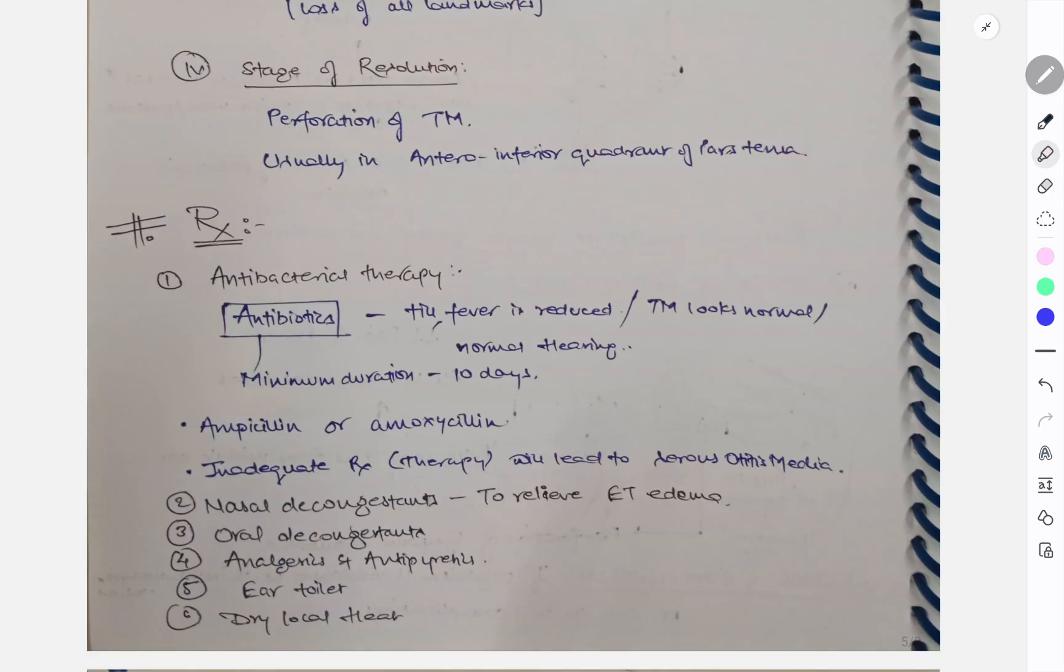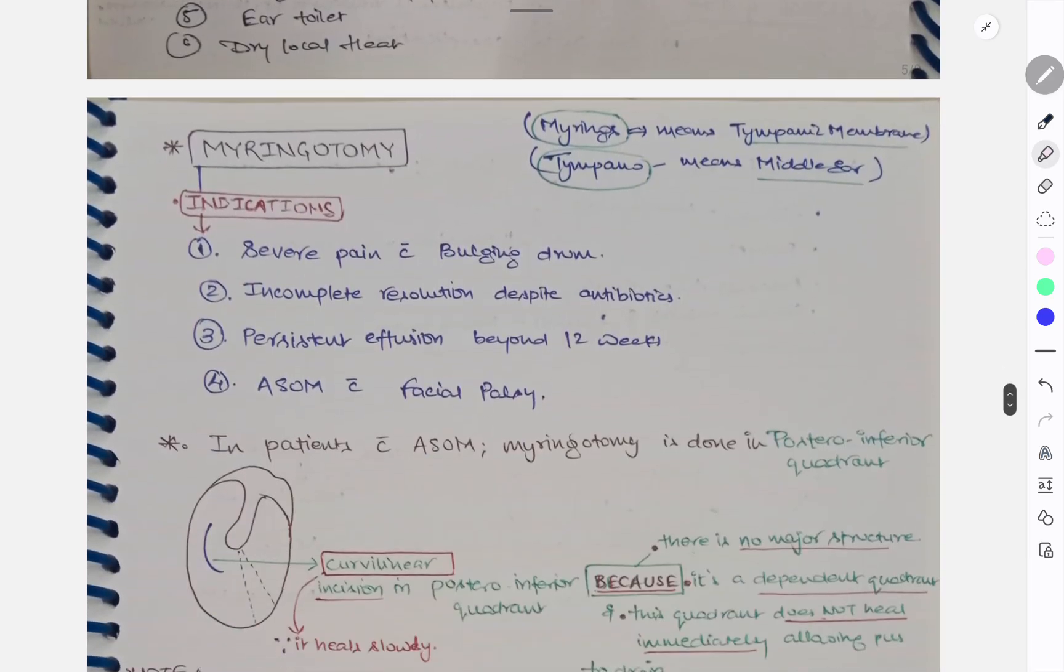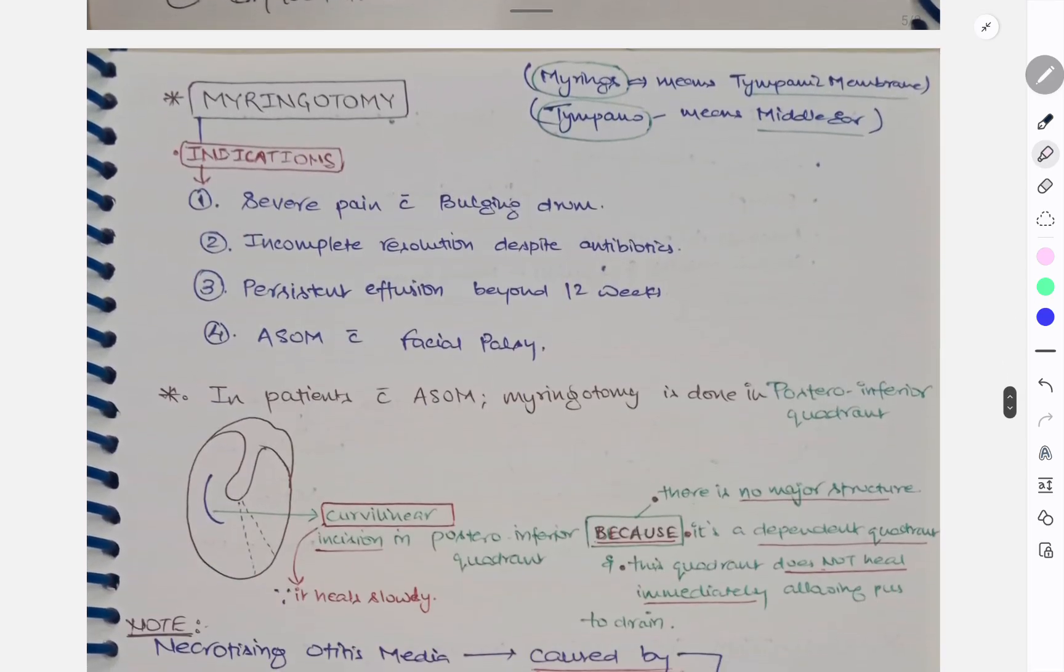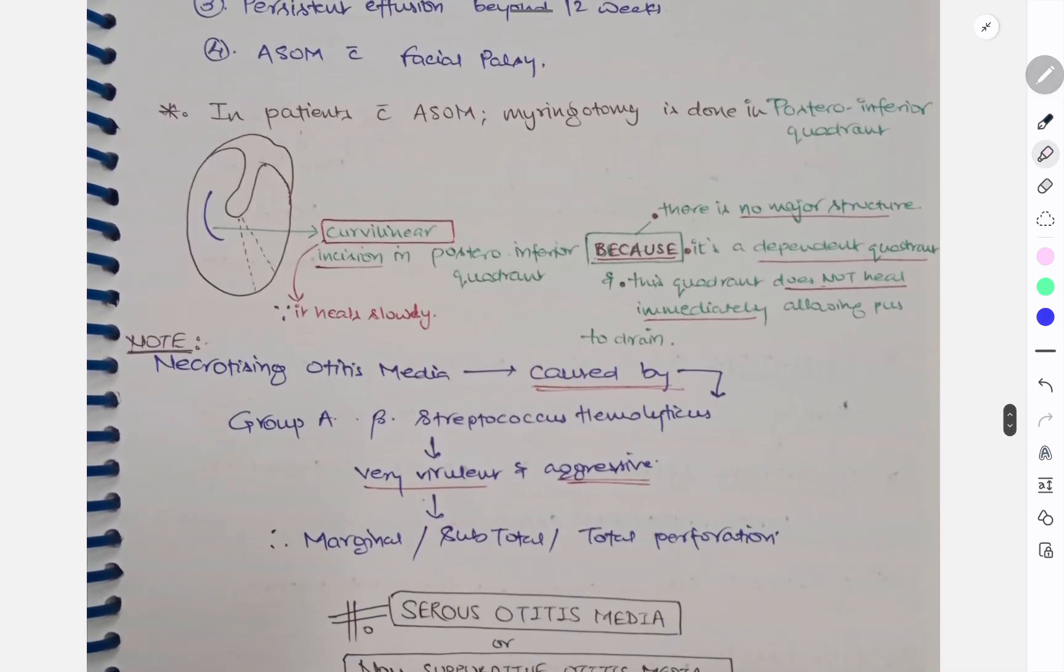And again for symptomatic relief, to relieve the Eustachian tube edema, we can use nasal decongestants, oral decongestants, analgesics, antibiotics, ear toileting, and dry local heat can be done. What is the main mode of treatment? Here you can do myringotomy. So here myringa means tympanic membrane. So we have to do some holes. So what are the indications of myringotomy? Severe pain with bulging drum. If there is severe pain with bulging drum, incomplete resolution despite antibiotics, persistent effusion beyond 12 weeks, and ASOM with facial palsy, we have to start with myringotomy.